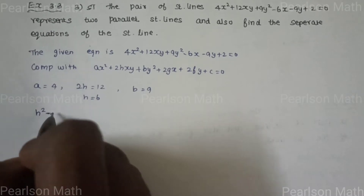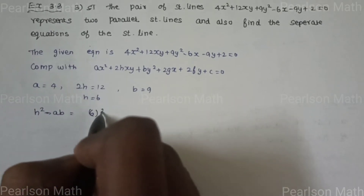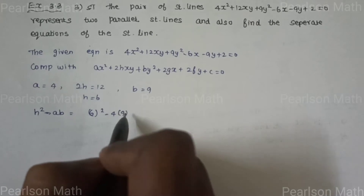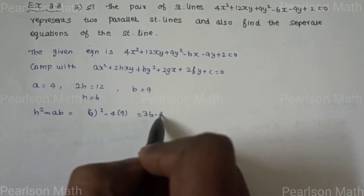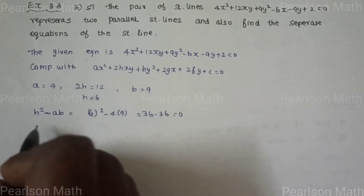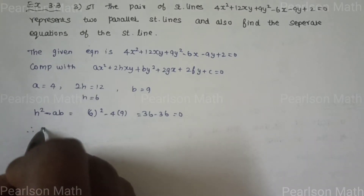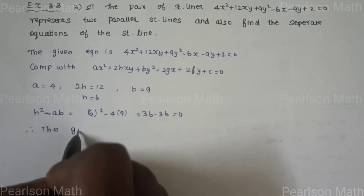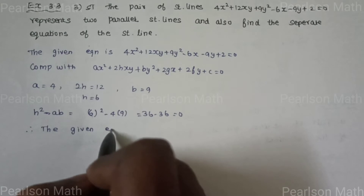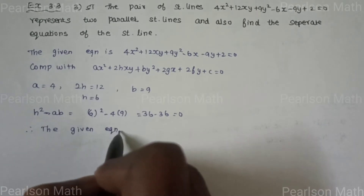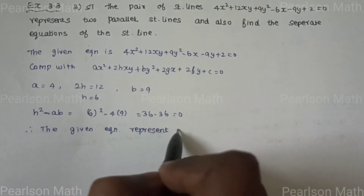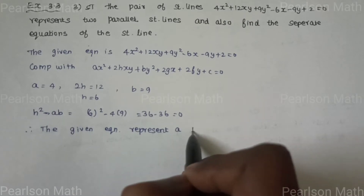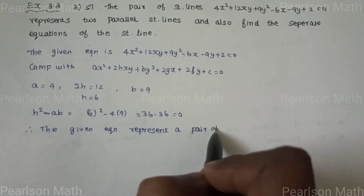Now h² - ab = 6² - (4)(9) = 36 - 36 = 0. Since h² - ab = 0, the lines are parallel. Therefore the given equation represents a pair of straight lines.